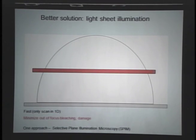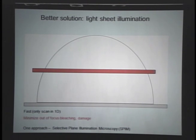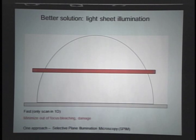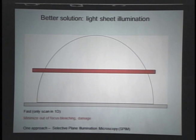Conceptually, you can do much better if you just illuminate one plane at a time. You use a light sheet to illuminate only the plane you're detecting, then scan this light sheet in one direction to build up a volume — that's very fast. If you tailor the light sheet the right way, you can minimize out-of-focus bleaching and damage. The idea of using light sheets in microscopy is not new — the Germans were doing it in 1903 and 1904 investigating colloidal suspensions — but it's undergone a renaissance in developmental biology, going by the acronym SPIM: selective plane illumination microscopy.